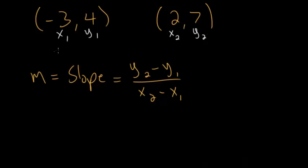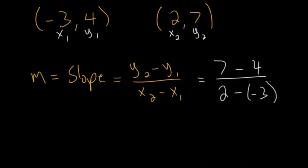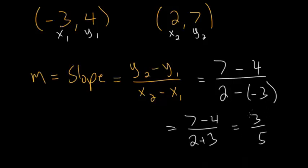You could have switched the labeling — calling the other point (x2, y2) — and you'd get the same answer, so as long as you're consistent it doesn't matter which point you call which. Plugging in: y2 is 7 minus y1 which is 4, divided by x2 which is 2 minus x1 which is −3. Be careful here because you're subtracting a negative, which is the same as adding. So we have (7 − 4) / (2 + 3) = 3/5. The slope of the line through these two points is 3/5.